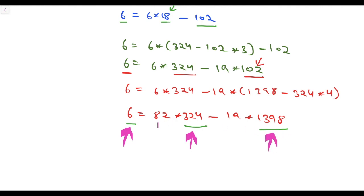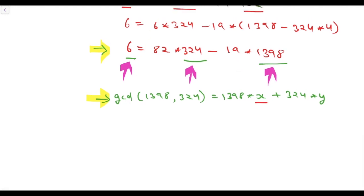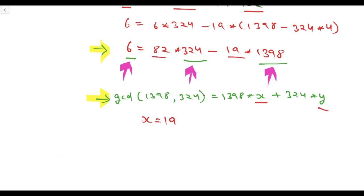Here you can see that 6 is the GCD of a and b, 324 is b, and 1398 is a. So our task is done. This equation is the same as: GCD(1398, 324) equals 1398 into x plus 324 into y. Let's compare these two equations. By comparison, the value of x becomes -19 and the value of y becomes 82. This is how we can use the standard Euclidean algorithm to write the GCD of two original numbers as a linear combination, and find the values of x and y.